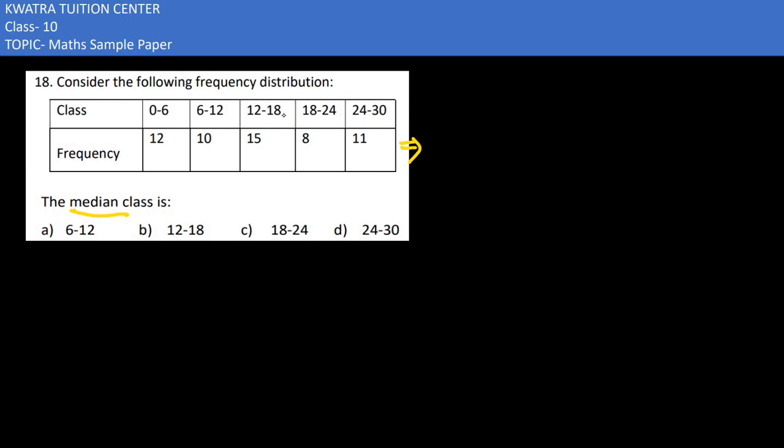12 plus 8 would be 20, 20 plus 10 would be 30, 30 plus 15 would be 45, 45 plus 11 would be 56. Now, in the next table,